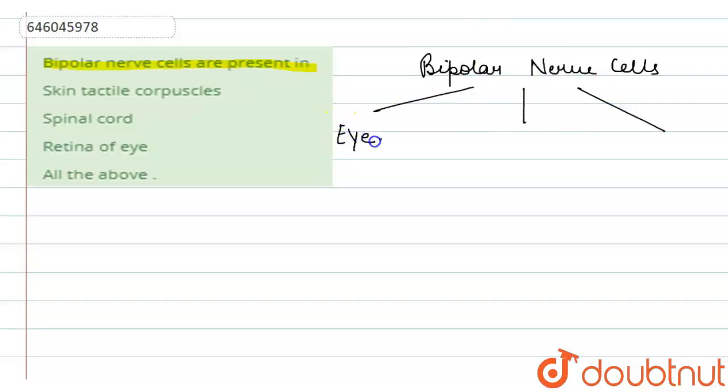Our eye, our nasal cavity or we can say nose, and in the ear. Now in the eye it is specifically found in the retina. For nose, it is found in the roof of the nasal cavity, and for ear it is found in the inner ear.